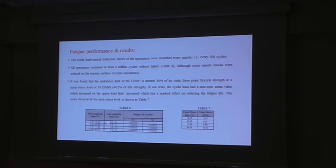All specimens sustained the initial cycles without failure as shown in Figure 6, although some results noted detection of cracks on surface of the specimen. And it was found that the endurance limit of this ultra-high performance concrete is around 80% of the static flexural strength at a mean stress level of 0.85 MPa, which is at 24.5 MPa. And tests at cycling load had a zero value, which increased at the upper rate of increase, which has a marked effect on reducing the fatigue life. The mean stress level of 0.85 MPa can be seen in Table 7.